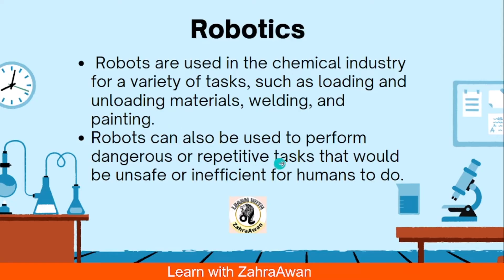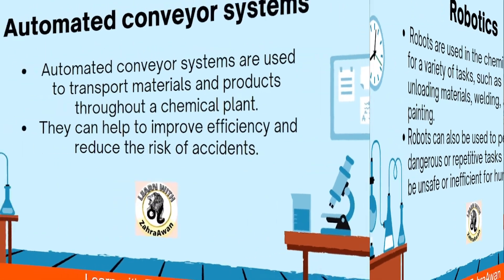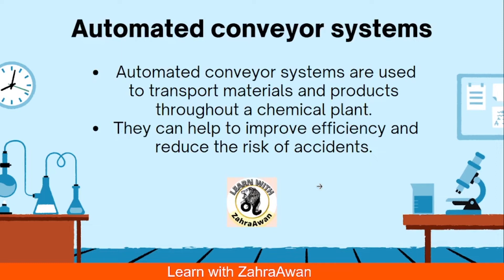Robots perform dangerous or repetitive tasks that would be unsafe or insufficient for humans to do. For heavy work and other kinds of tasks where humans are inefficient, robots also perform these in the chemical industry. Next we have automated conveyor systems, which are used in chemical industries to transport materials and products through chemical plants. In large-scale manufacturing plants, automated conveyor systems use materials and transport to help convey.